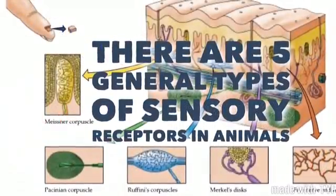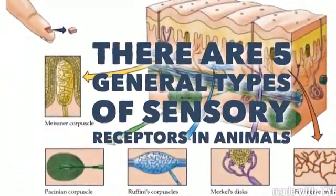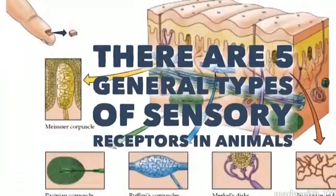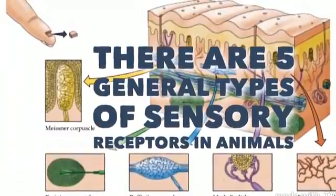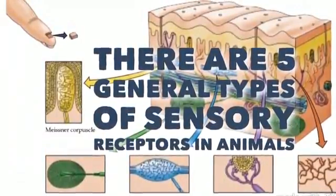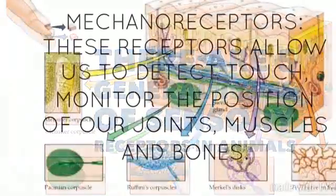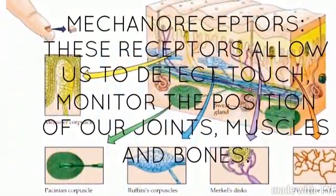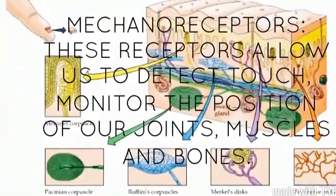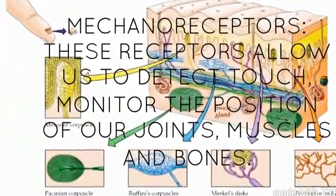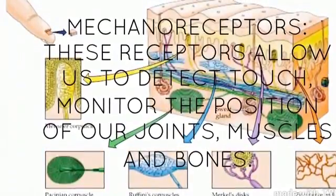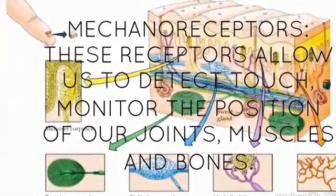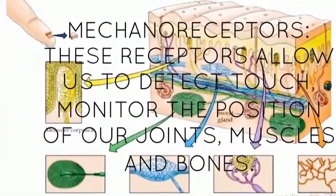There are five general types of sensory receptors in animals. Mechanoreceptors are receptors that allow us to detect touch, moderate positioning of our joints, muscles, and bones.